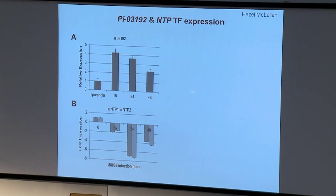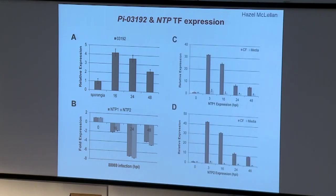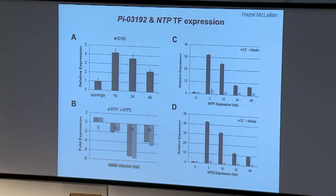The next thing we wanted to look at was the expression of our effector and the two targets. 03192 is upregulated quite early on in infection, around about 16 hours — a time point at which under the microscope we start to see the formation of haustoria, the means by which these effectors are delivered inside the plant cell. In contrast, both NTP1 and NTP2 are downregulated during infection. However, if we take culture filtrate from Phytophthora-conditioned medium and infiltrate it into the plant as a cocktail of PAMPs, both NTP1 and NTP2 are coordinately upregulated. So both of them are upregulated by PAMPs, but they're not upregulated during infection — the active pathogen has suppressed their induction.